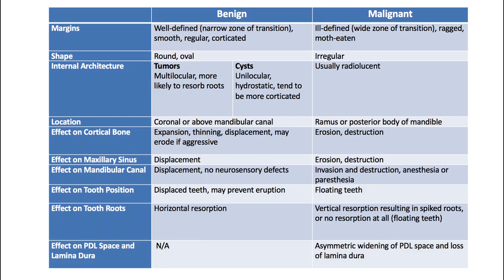For a benign lesion, margins tend to be more well-defined — that means a narrow zone of transition. There's not a whole lot of transition between the edge of the lesion and the rest of normal tissue. The margins will be smooth and regular, and you'll usually get some cortication clearly defining the borders. For malignant lesions, it's going to be ill-defined with a wide zone of transition — ragged and moth-eaten appearances are all characteristic of malignancies.